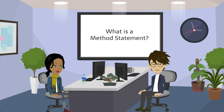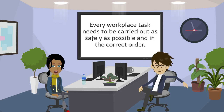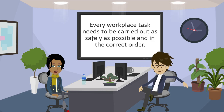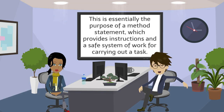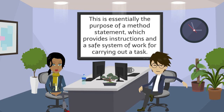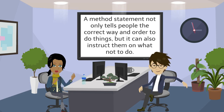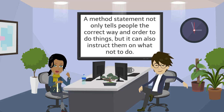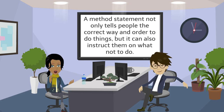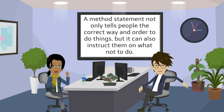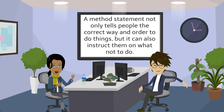What is a method statement? Every workplace task needs to be carried out as safely as possible and in the correct order. This is essentially the purpose of a method statement, which provides instructions and a safe system of work for carrying out a task. A method statement not only tells people the correct way and order to do things, but it can also instruct them on what not to do.